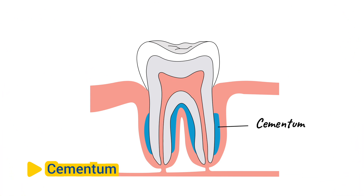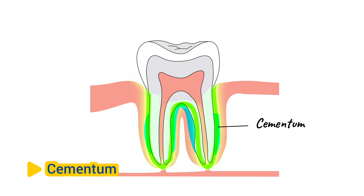Cementum. Cementum is a layer of hard tissue that covers the roots of the tooth and helps anchor it to the jawbone via the periodontal ligament. It is similar in composition to bone, but is less mineralized. Cementum provides stability and support to the tooth and plays a crucial role in maintaining the integrity of the tooth's attachment to the surrounding tissues.